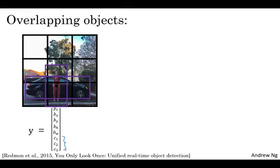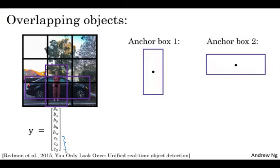With the idea of anchor boxes, what you're going to do is pre-define two different shapes, called anchor boxes or anchor box shapes. And what you're going to do is now be able to associate two predictions with the two anchor boxes. And in general, you might use more anchor boxes, maybe five or even more. But for this video, I'm just going to use two anchor boxes just to make the description easier. So what you do is you define the class label to be, instead of this vector on the left, you basically repeat this twice.